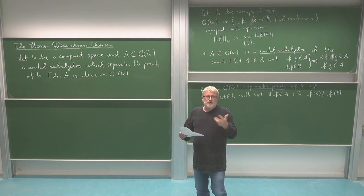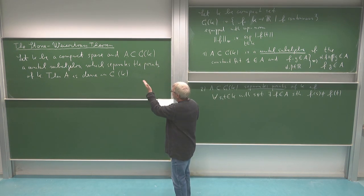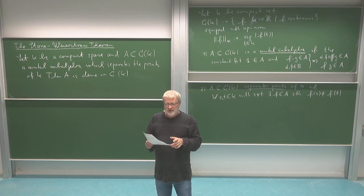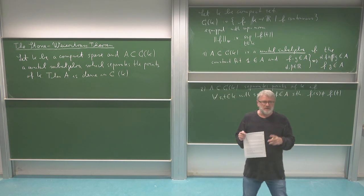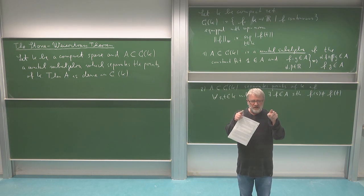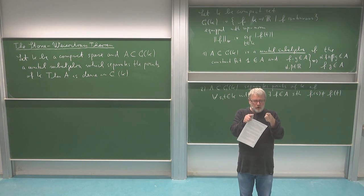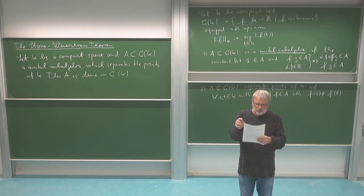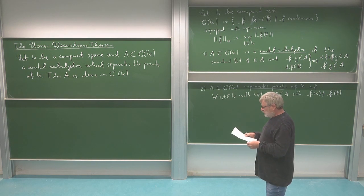If one wants to go back to the classical Weierstrass theorem, one should check that the polynomials satisfy these conditions — and this is trivially true. If I multiply or add polynomials I get other polynomials, I have the constant polynomial, and polynomials separate points. If I have two different points in [0,1], I can find a polynomial which takes arbitrary different values at those two points.